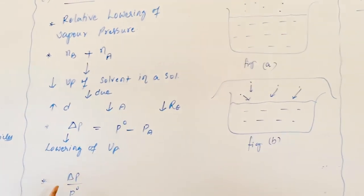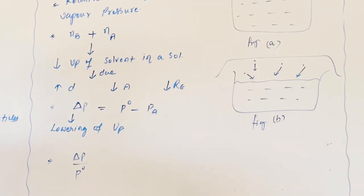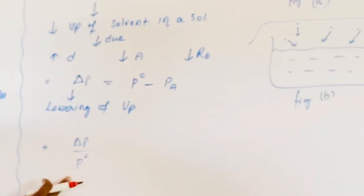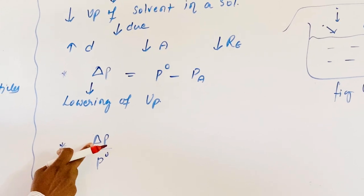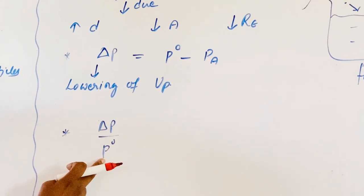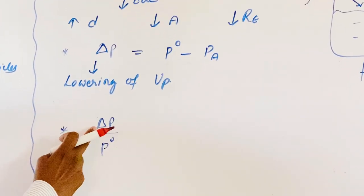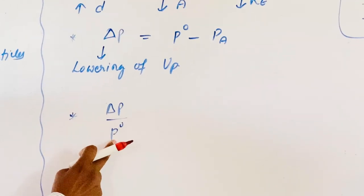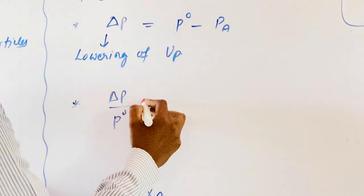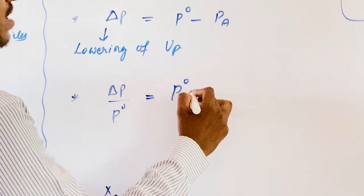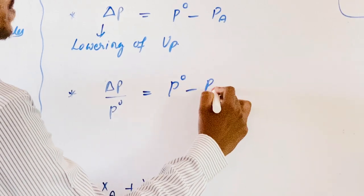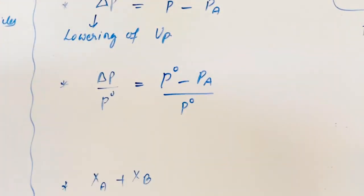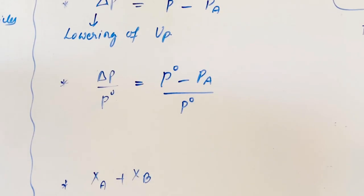Now, Relative Lowering of Vapor Pressure is given as the ratio of change in pressure to P₀. P₀ represents vapor pressure of pure solvent. Therefore, Relative Lowering of Vapor Pressure equals (P₀ minus P_A) divided by P₀.